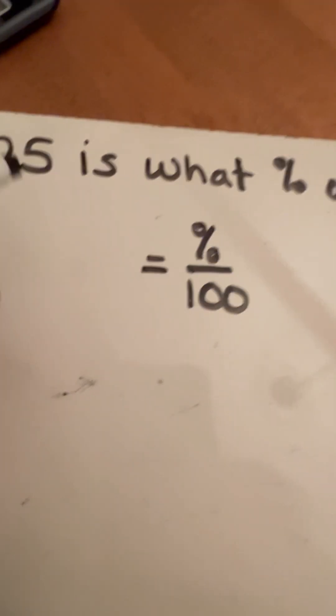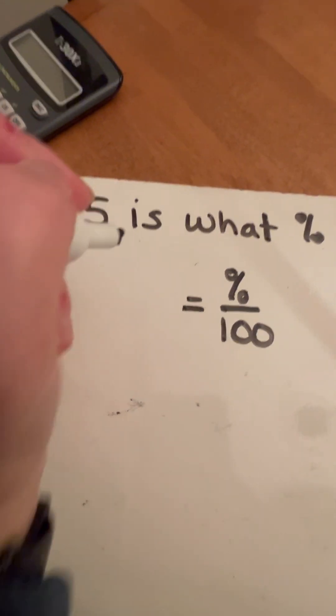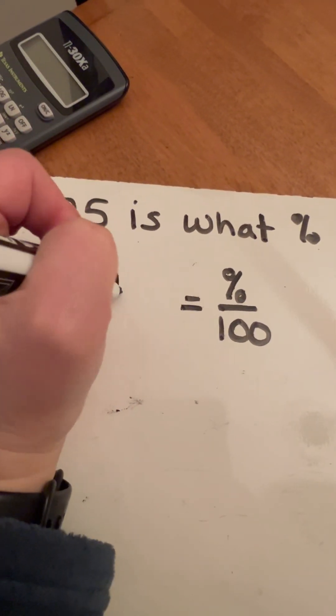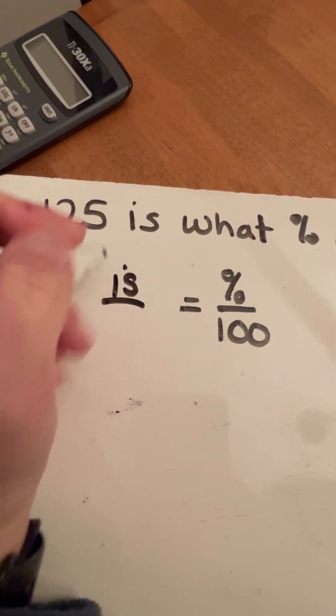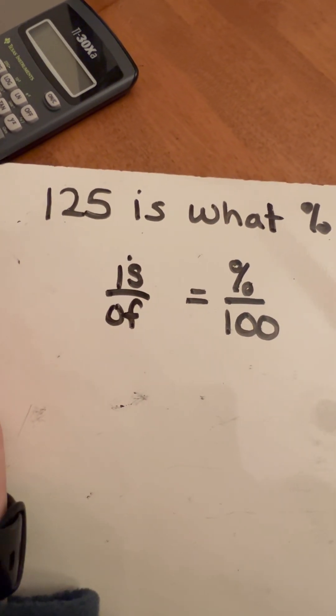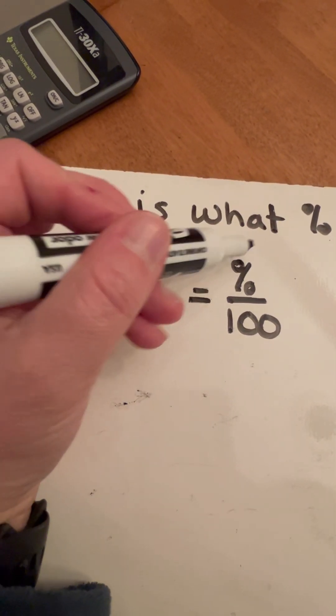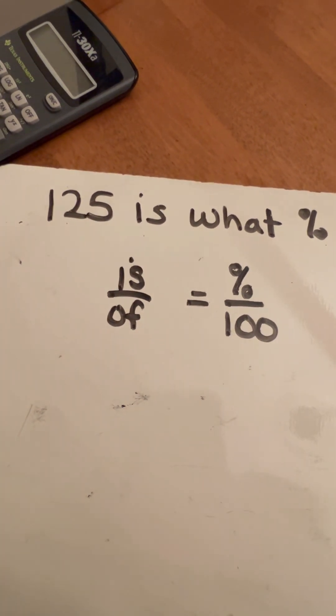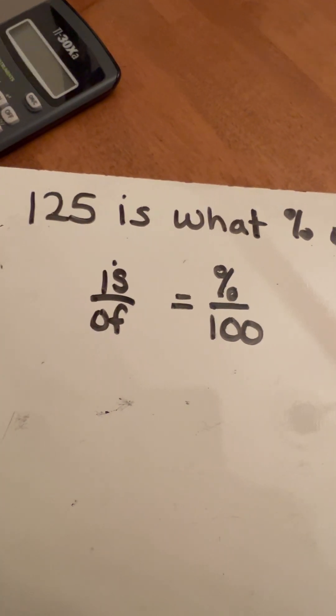So as you can see, what we're going to have is the 'is' should go on top in my numerator. My 'of' is going to be in the denominator or in the bottom of a fraction. And you're going to set it up equal to whatever the percentage that you're looking for, or if you're given that information, over 100.